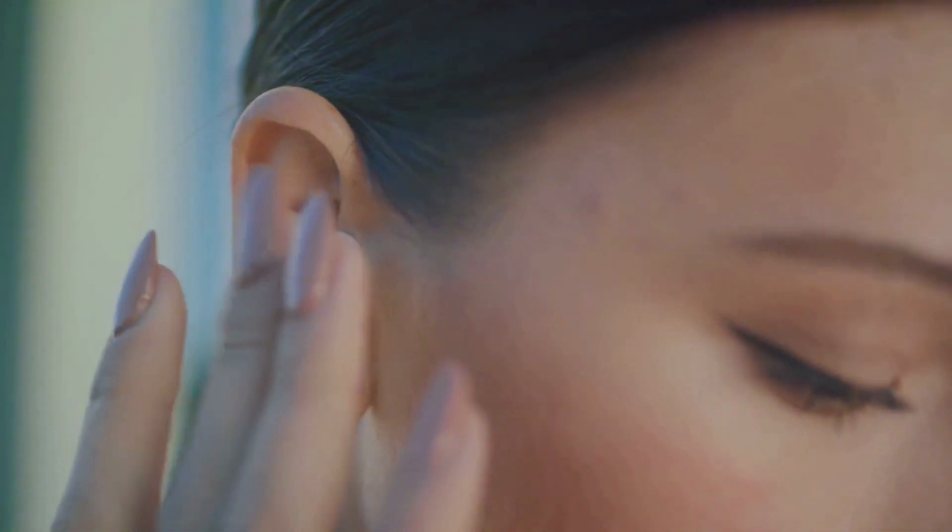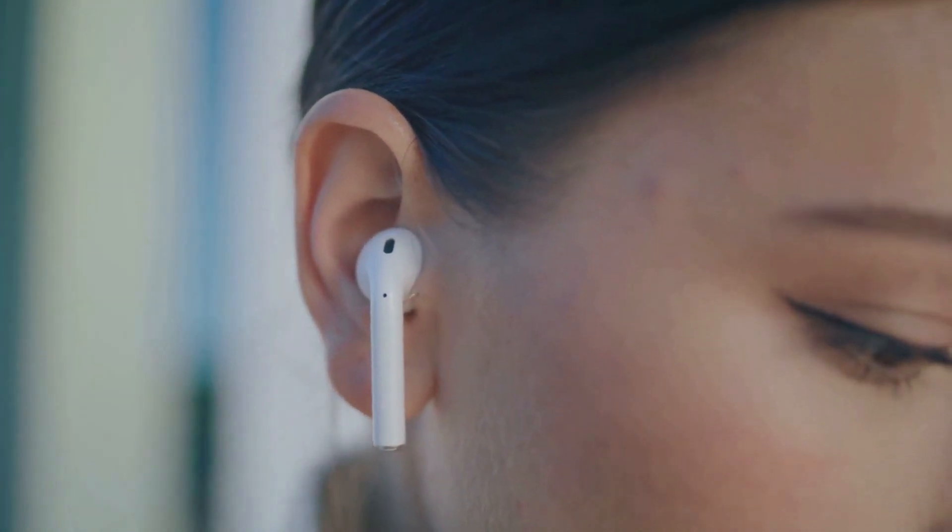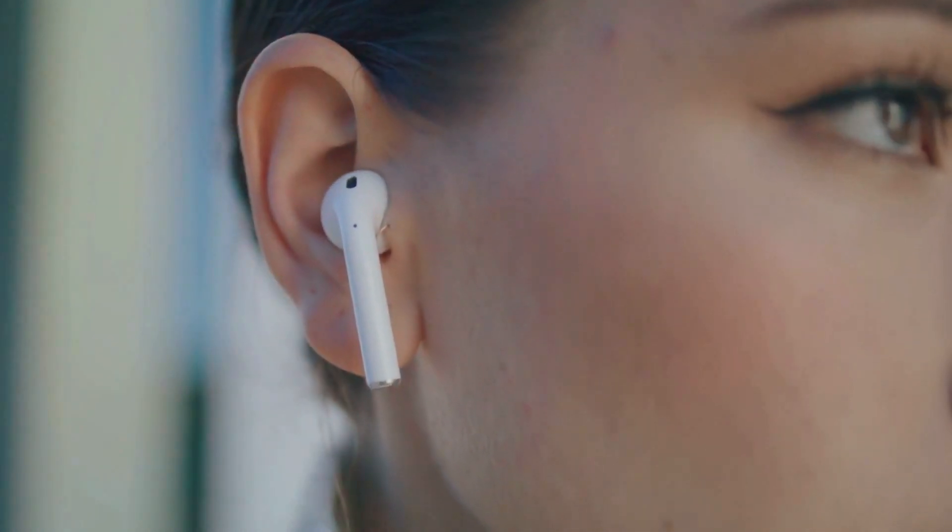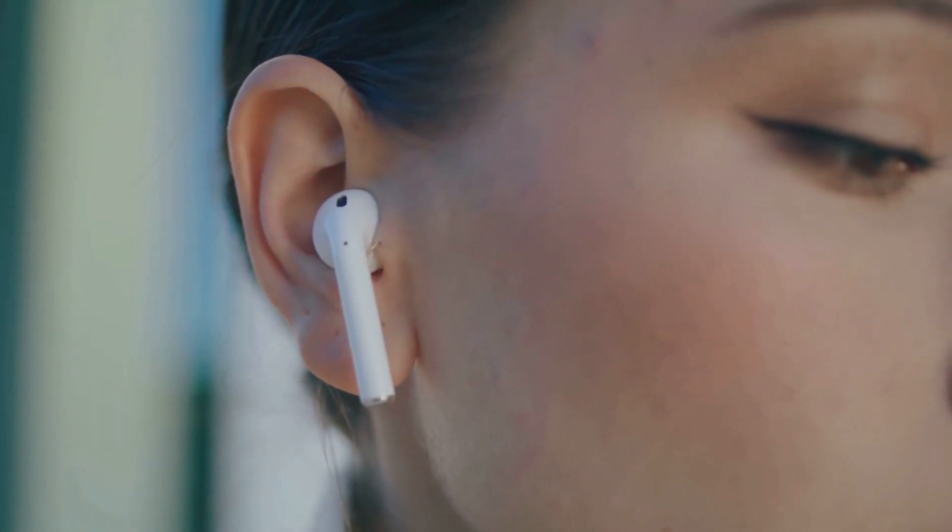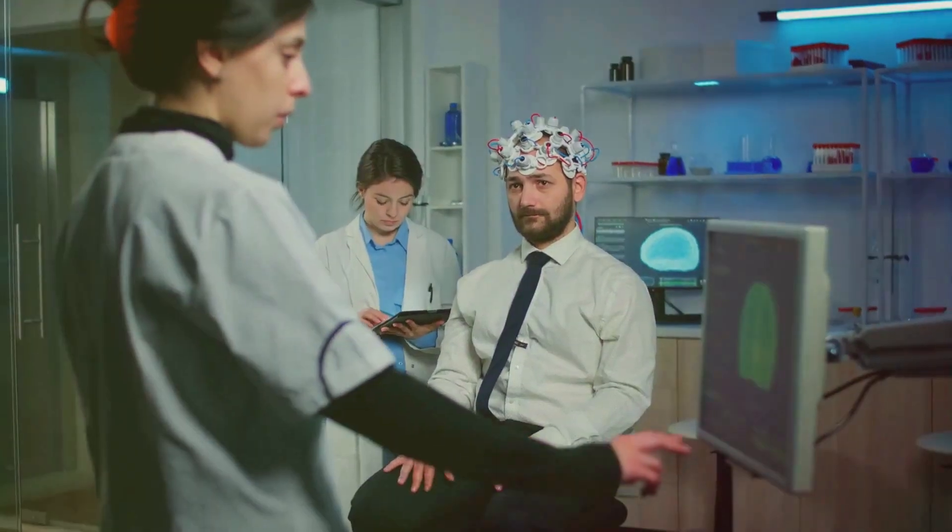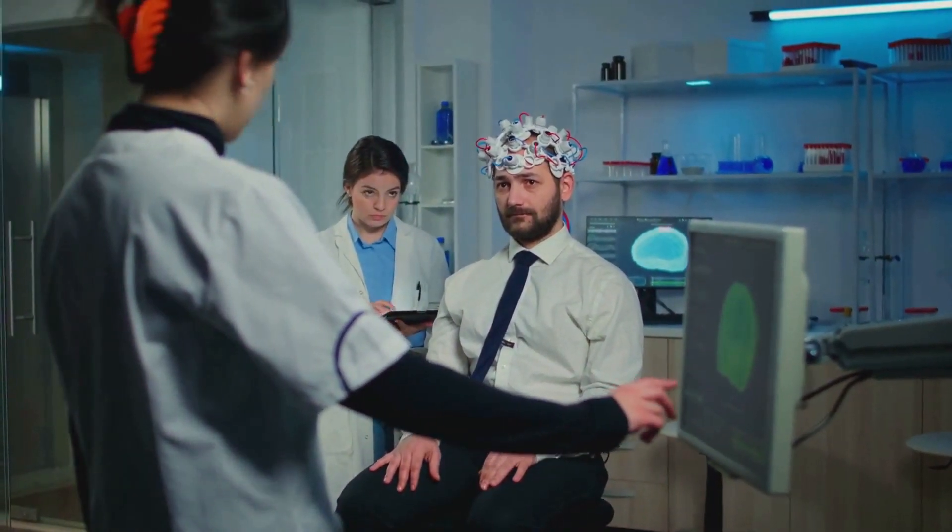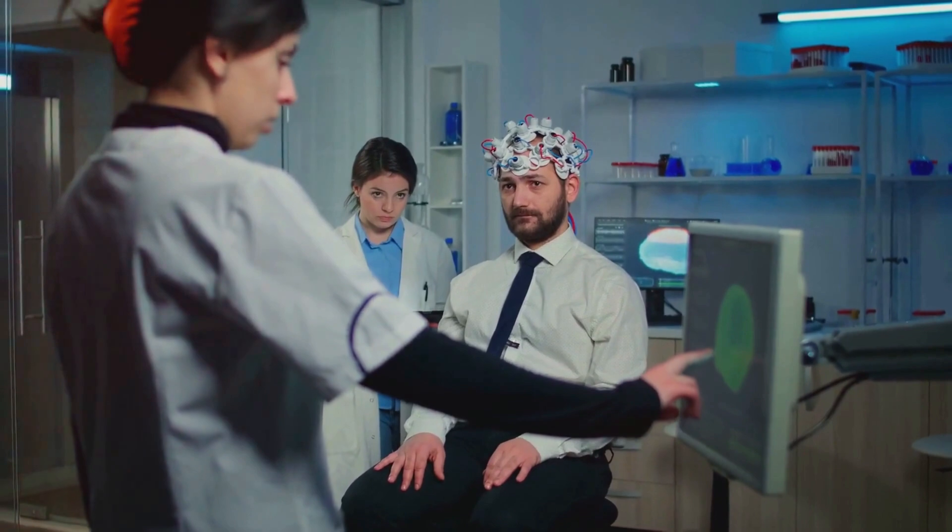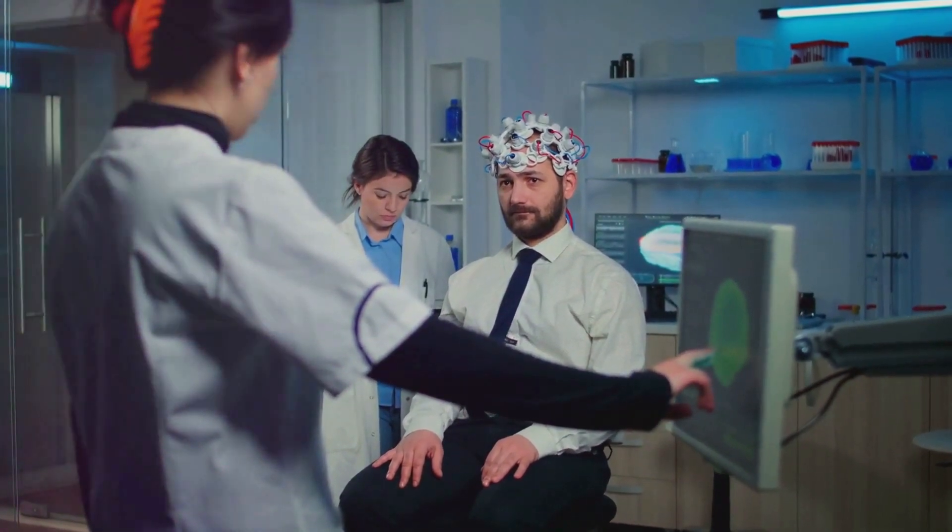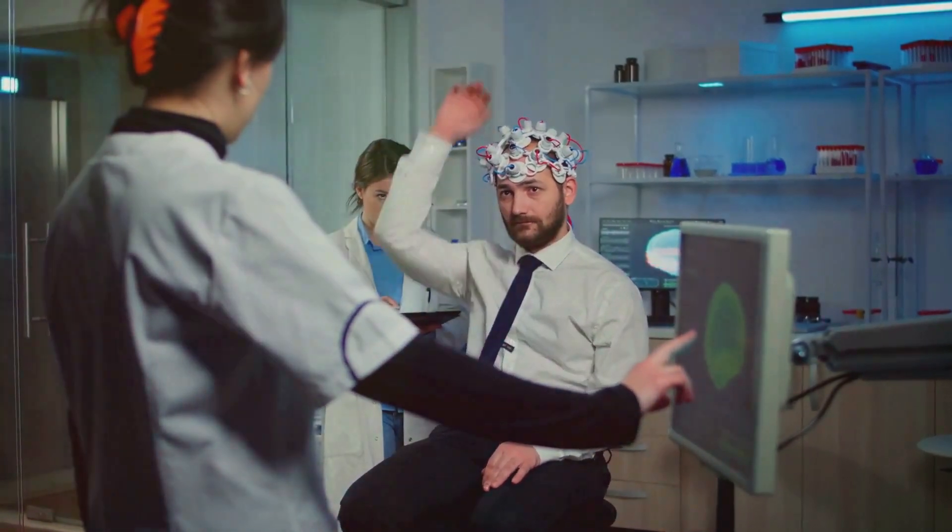Once the threads are in place, the information they gather from the neurons is sent to a device called the link. The link is a small, wearable device that sits behind your ear, much like a hearing aid. It collects and processes the data from the threads, and then sends it wirelessly to a computer or an AI system for further analysis and action.